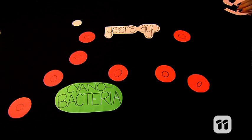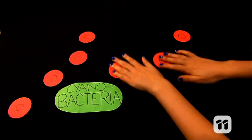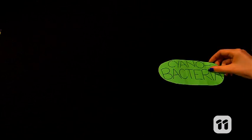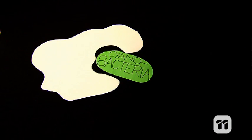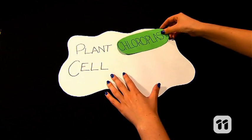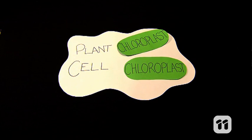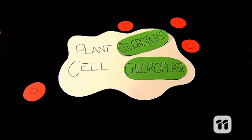Some cyanobacteria also get swallowed by a cell. This cyanobacteria is thought to be the ancestor for chloroplasts found in the plant cells that enable them to photosynthesise today, keeping oxygen available so that we can all breathe easy.